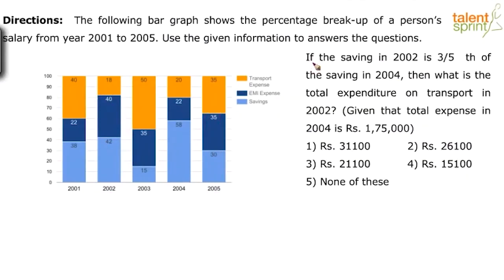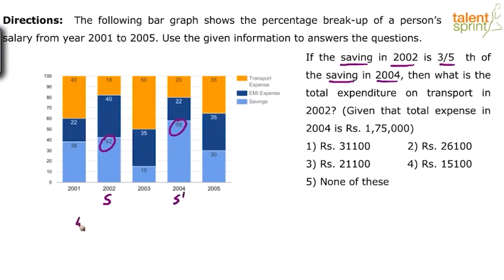Let's look at the next question. If the saving in 2002 is three-fifths of the saving in 2004, then what is the total expenditure on transport in 2002, given that the total expense in 2004 is ₹1,75,000? Let's frame the equations. Savings in 2002 is 42% and in 2004 is 58%. So 42% of S equals (3/5) of 58% of S'. This gives us the ratio of S to S'.